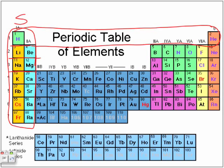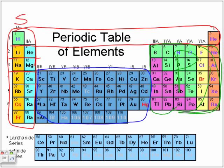Now we're going to move across and look at these elements over here. These are going to be represented by our p subshell. Everything within the transition metal block is our d, and all the elements down here at the bottom are the f shell.